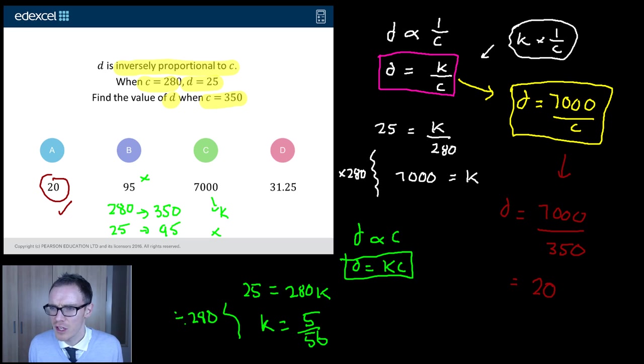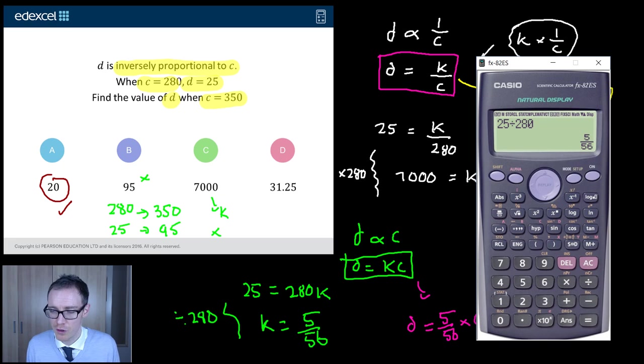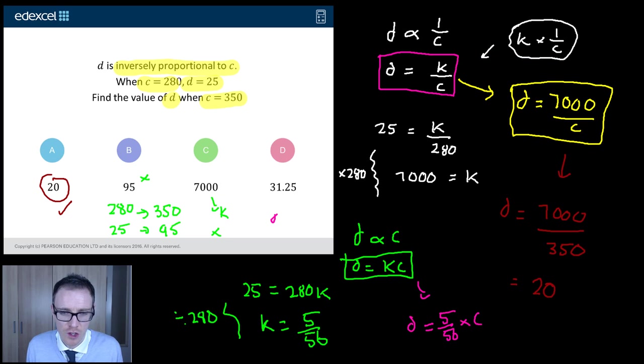And now if I just work this out here, I get D is equal to 0.0556 times by whatever C is. So if my C is 350, if I just get this up here, so I do my K is 0.0556 times by 350, well then what do I end up with? 31.25. So I reckon this comes from students thinking it is a direct proportion question.